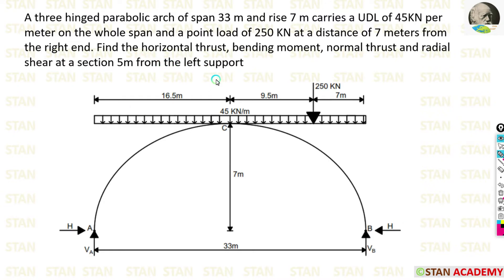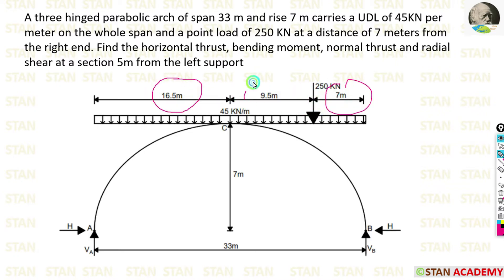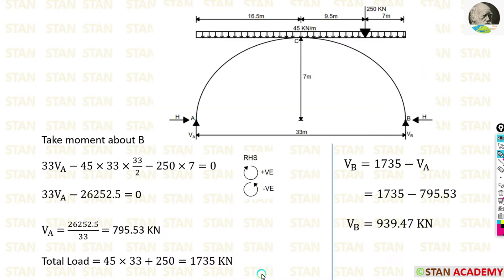After drawing the arch, we make the dimensions: 33 divided by 2 gives 16.5 meters. Then 16.5 minus 7 gives 9.5 meters. In this way we can mark the dimensions on the arch.